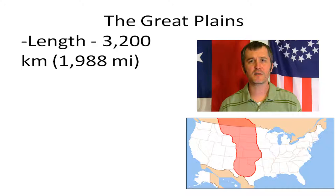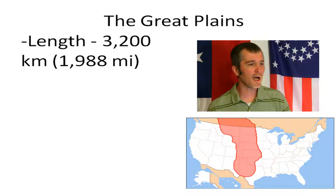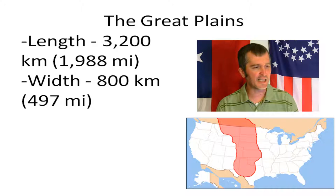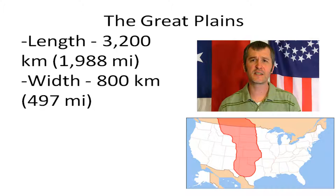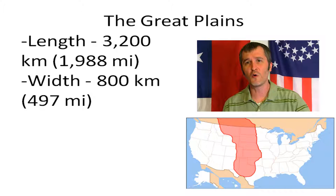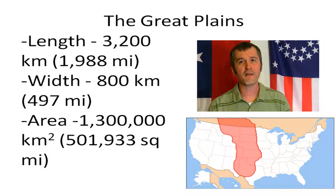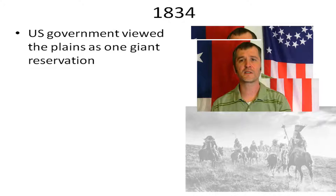The Great Plains is this area across the middle of the United States map. These tribes inhabited it, living there for thousands of years following the buffalo back and forth up this corridor. We're talking about 1,988 miles in length, about 497 miles wide — roughly 500,000 square miles of territory that's going to have to be settled.